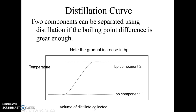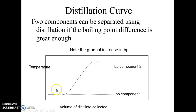This axis is the volume of distillate collected, and this is the temperature. The distillate is what you have on the other side; the distilland is what is in the pot being distilled. When just a pure component is coming over, the volume increases as the temperature remains steady. But as component one decreases, temperature gradually increases until you reach the boiling point of the second component. That's why we can separate them — we take a fraction here, discard the middle portion, and take a fraction there.